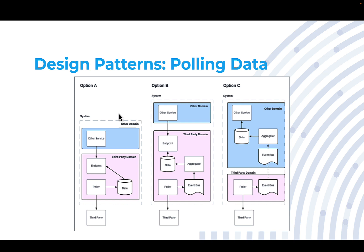We then have a third-party service endpoint for our third-party domain that other domains within our system can call. The disadvantage of this option is it's not really event-driven and it's also not keeping track of the events in their raw form. The poller has to go and scrape the information from whatever the third-party endpoint is and then figure out how to update the current model.